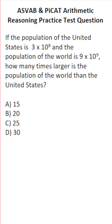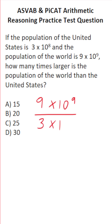Of course, you would do division to solve this one. Specifically, you're going to do the population of the world — that is 9 times 10 to the 9th — divided by the population of the United States, which is 3 times 10 to the 8th.